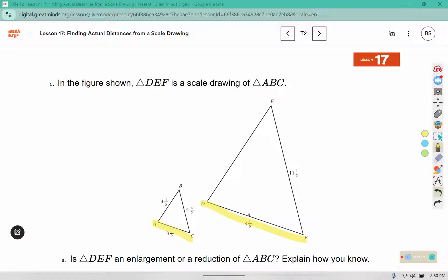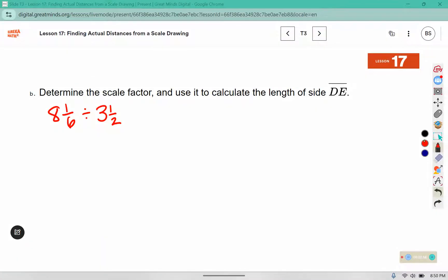So I'm going to divide the new by the original, the scale by the original. So 8 and 1 sixth divided by 3 and 1 half. I'm going to change these to improper fractions. 8 times 6 is 48 plus one more makes 49. 3 times 2 is 6 plus one more makes 7.